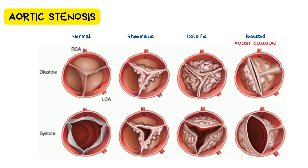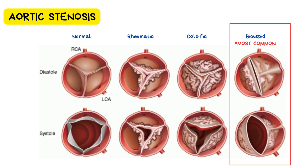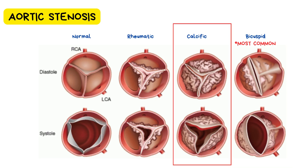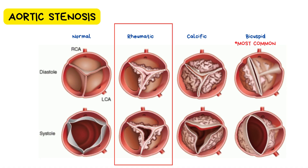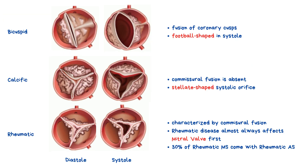Let's talk about what actually causes aortic stenosis. A bicuspid aortic valve — meaning instead of three leaflets, the valve has only two — leads to earlier wear and tear. Next is calcific stenosis of a normal tri-leaflet valve, typically age-related and influenced by lifestyle and gradual calcium buildup. Finally, there's rheumatic valve disease, which is less common in developed countries but globally remains more prevalent than calcific stenosis. To recap: bicuspid valve is the most common cause, followed by calcific degeneration, then rheumatic valve disease.